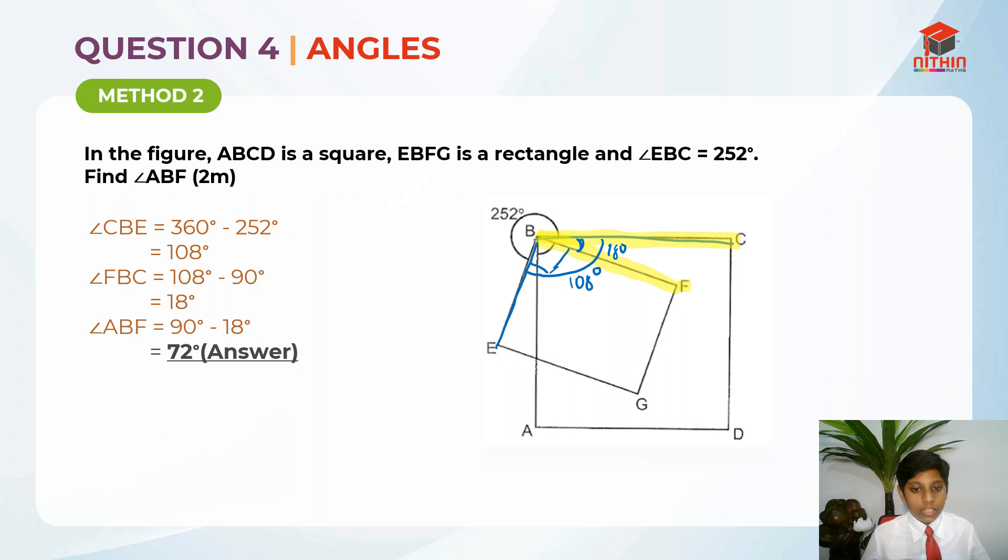The next step is to find ABF. It's really simple. We take this square's 90 degrees minus the 18 degrees over here, and we'll get the answer over here for ABF. We'll get the answer as angle ABF equals to 90 degrees minus 18 degrees, which will give us 72 degrees. That's the answer.